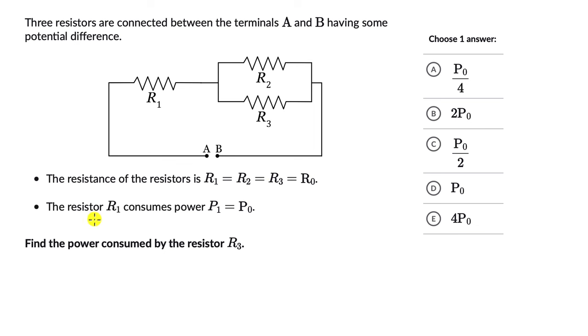Resistances are the same and the resistor R1 consumes power P1 which is equal to P0. We need to figure out the power consumed by the resistor R3 and we need to express that in terms of P0 which is the power consumed by resistor R1.